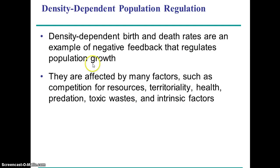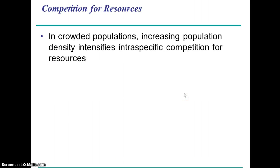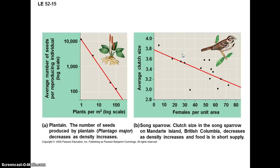Many factors can affect birth and death rates — resources in the environment and all sorts of things. The amount of food: as a population becomes larger, food can become a limiting resource, there's less food per individual, and therefore there'll be a lot of intraspecific competition within the species for those resources.